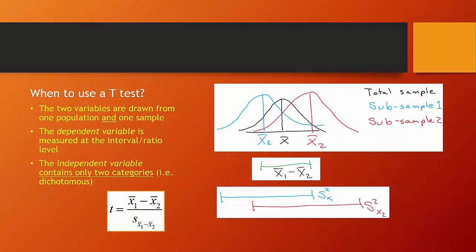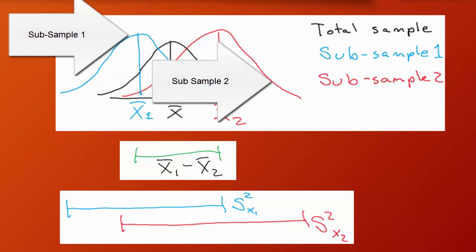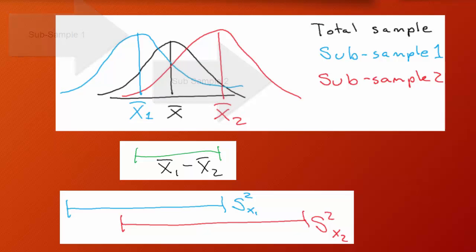When to use a t-test: we want variables drawn from one population and one sample. Our dependent variable is measured at the interval or ratio level, and our independent variable is a dichotomy that we conceptualize as two different subsamples. Imagine the black line indicates a single sample, and the categories of the independent variable are then broken apart. If we're trying to compare average salaries, we break our sample into two subsamples — one for men and one for women — and ask whether there are differences in average salaries.